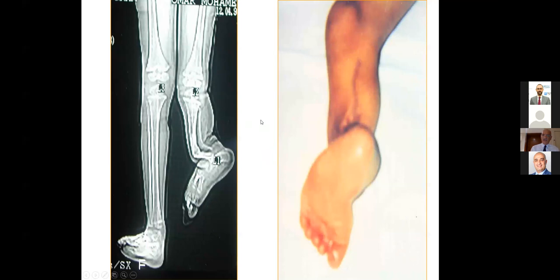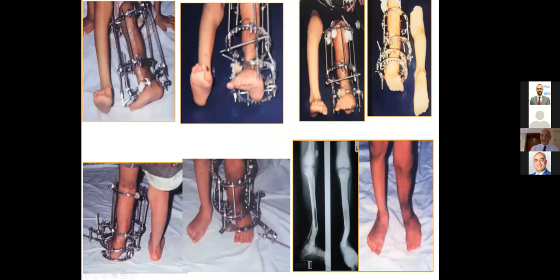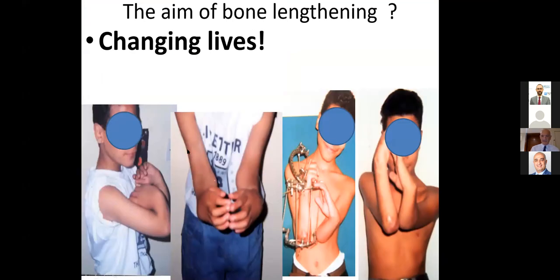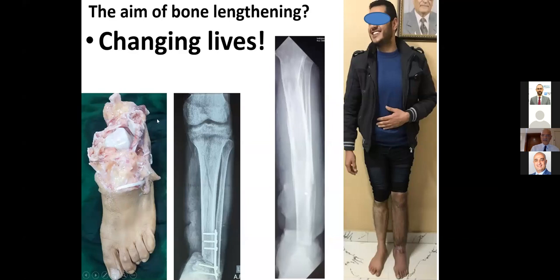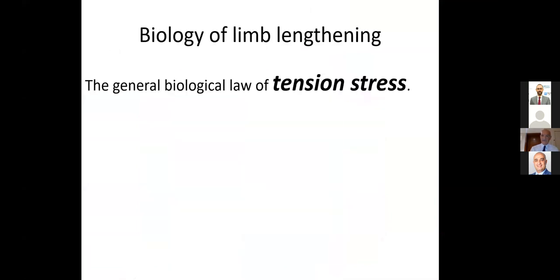We talk about lengthening with derotation — rotational lengthening — until you get a correct picture. We're talking about changing lives, not just lengthening: 110% forearm lengthening, amputated foot and replantation with 22 cm lengthening. Even the cosmetic lengthening we do is far more than 1.5 mm. We are not speaking about the same patients — these are two different things.